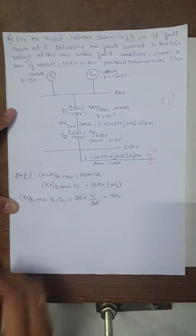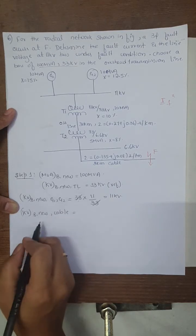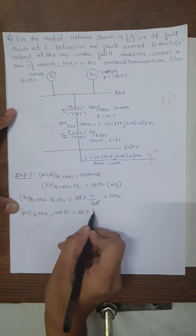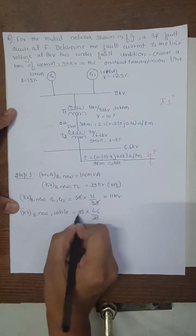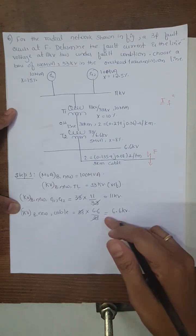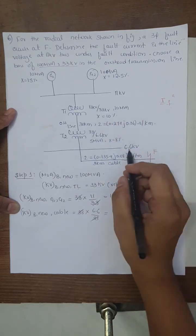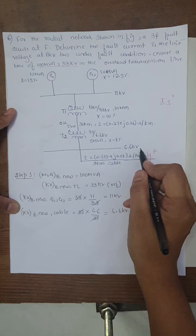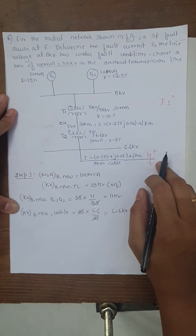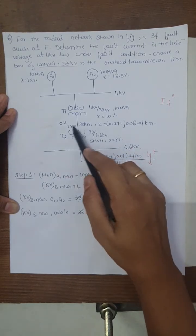Similarly, the base voltage of the underground cable is found using the same formula: 33 kilovolt base multiplied by low voltage 6.6 divided by high voltage 33, giving 6.6 kilovolt. This underground cable is on the LT section of the system carrying 6.6 kilovolt. We now proceed with reactance calculations for generators, transformers T1 and T2, the underground cable, and the overhead transmission line.